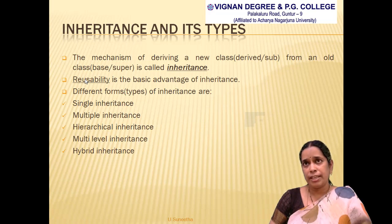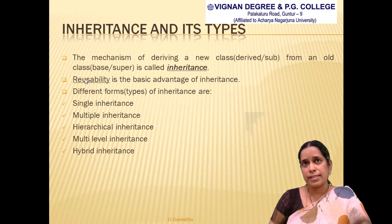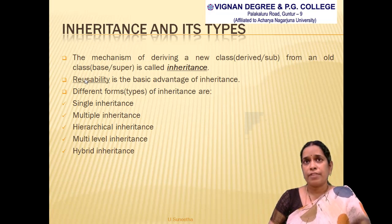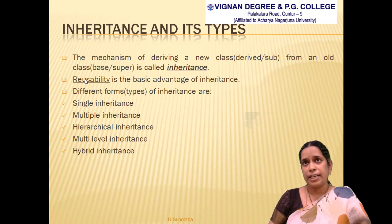We can achieve reusability by implementing inheritance, because from an already existing class we create new classes without writing them from scratch. The types of inheritance are: single inheritance, multiple inheritance, hierarchical inheritance, multilevel inheritance, and hybrid inheritance.